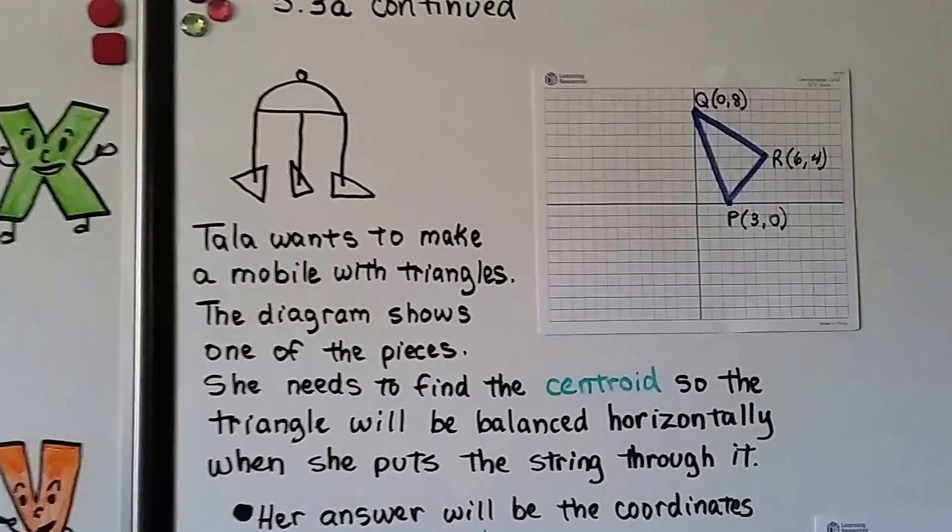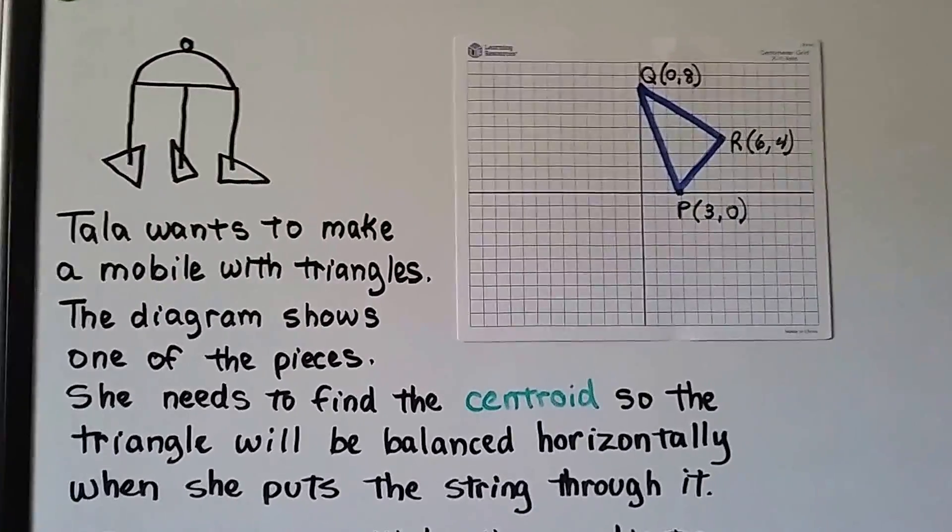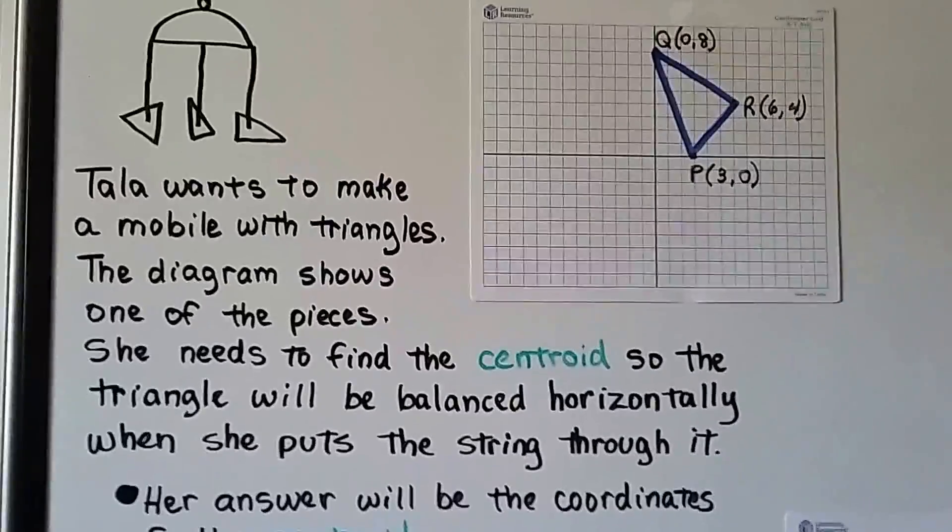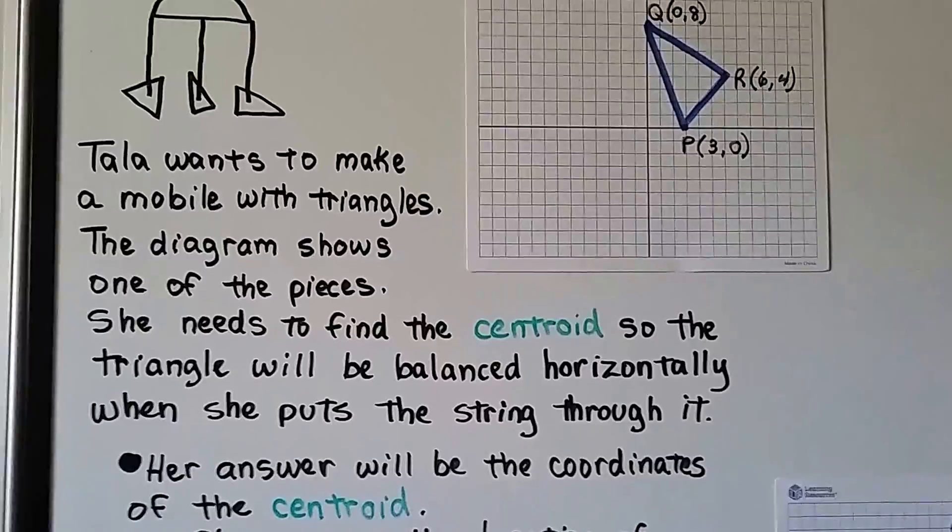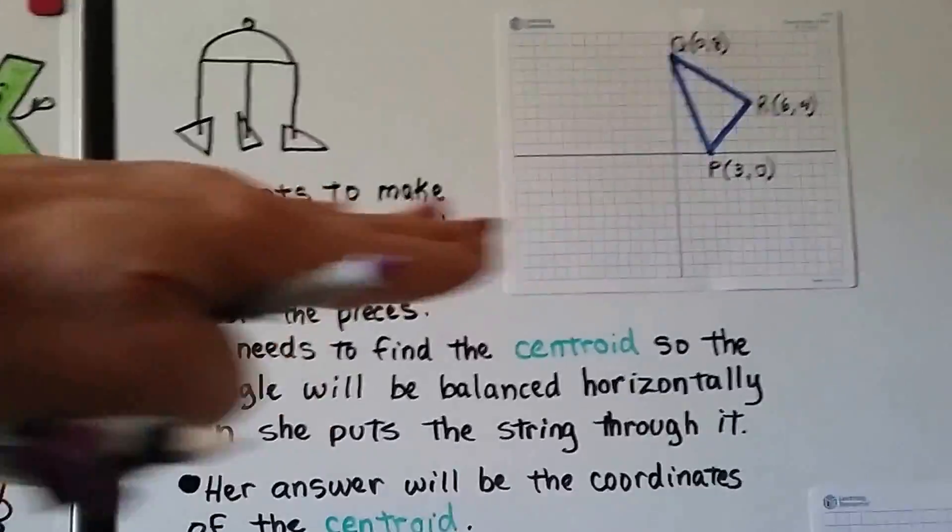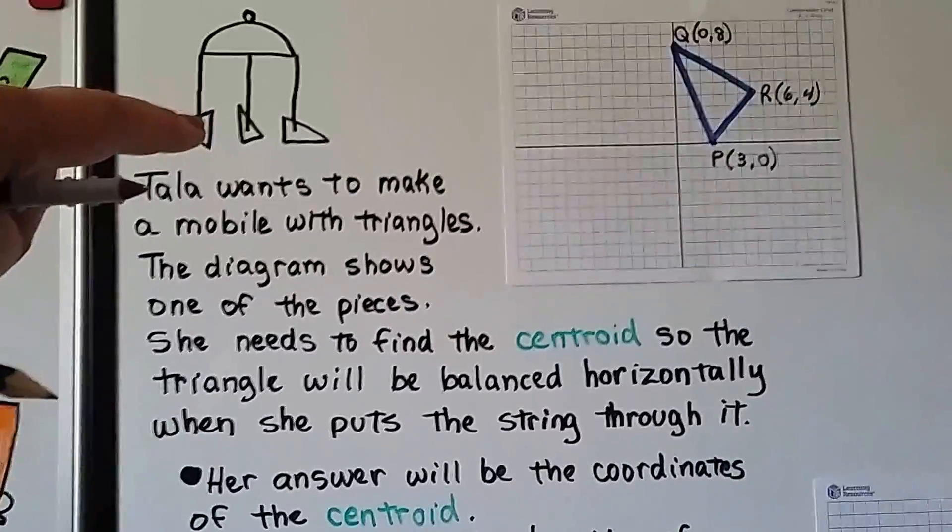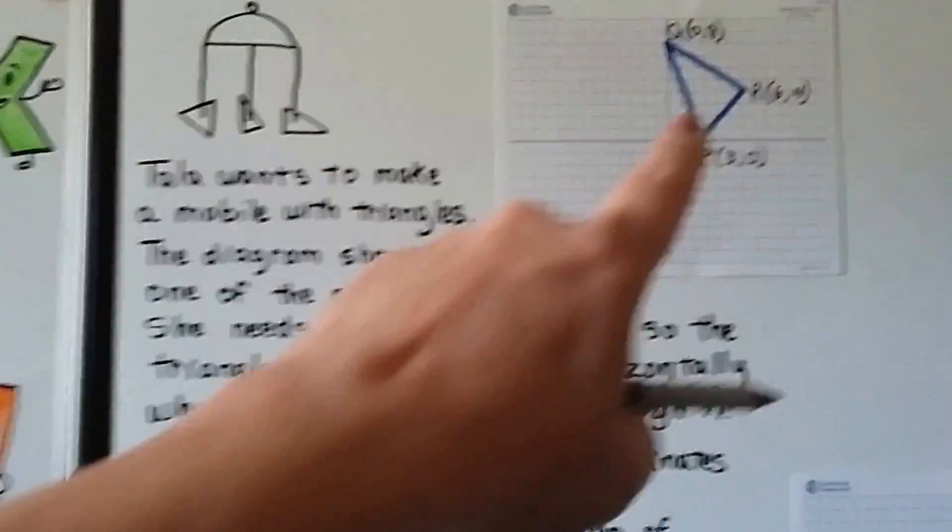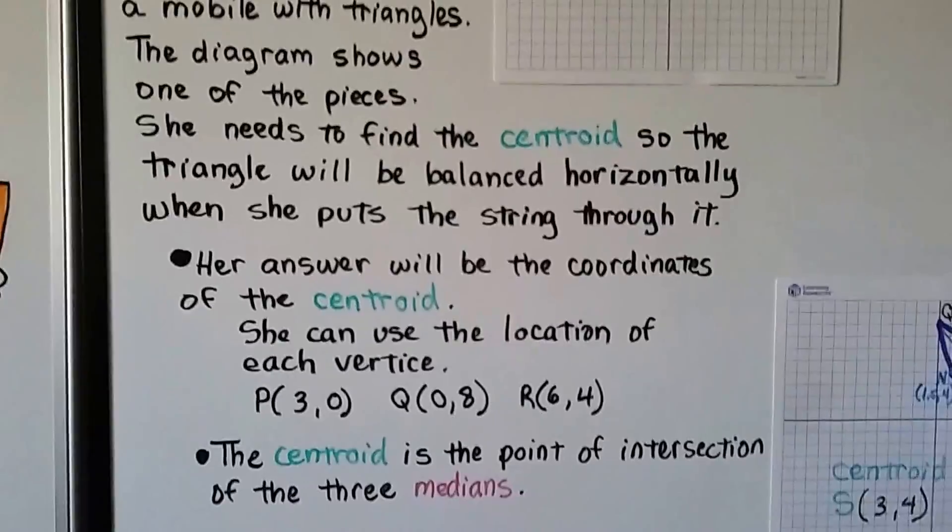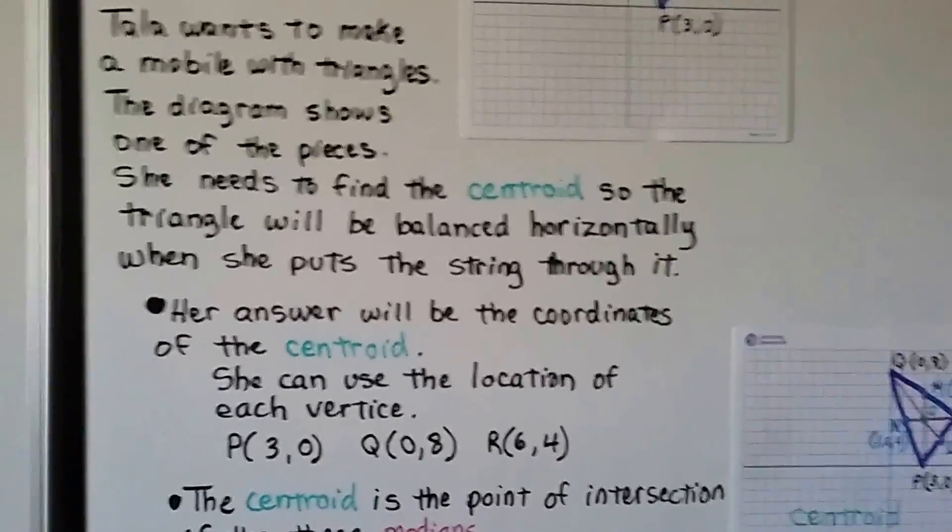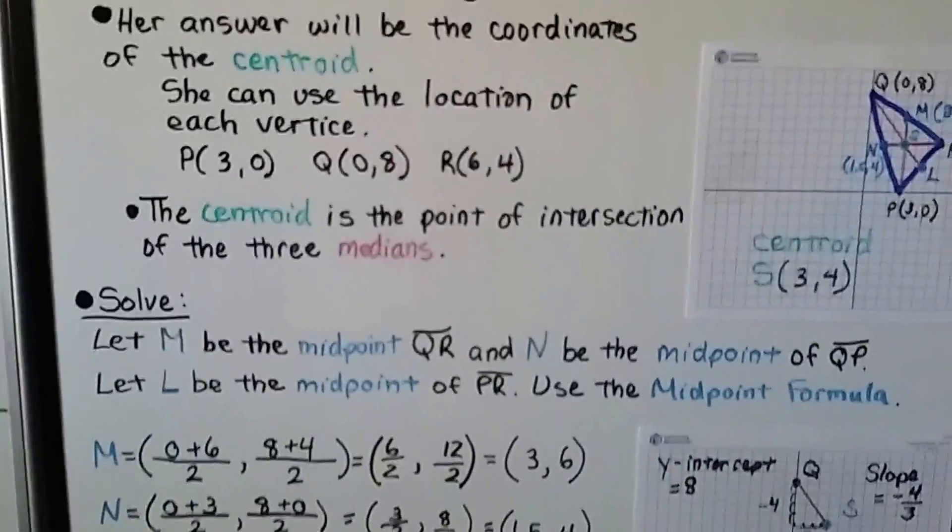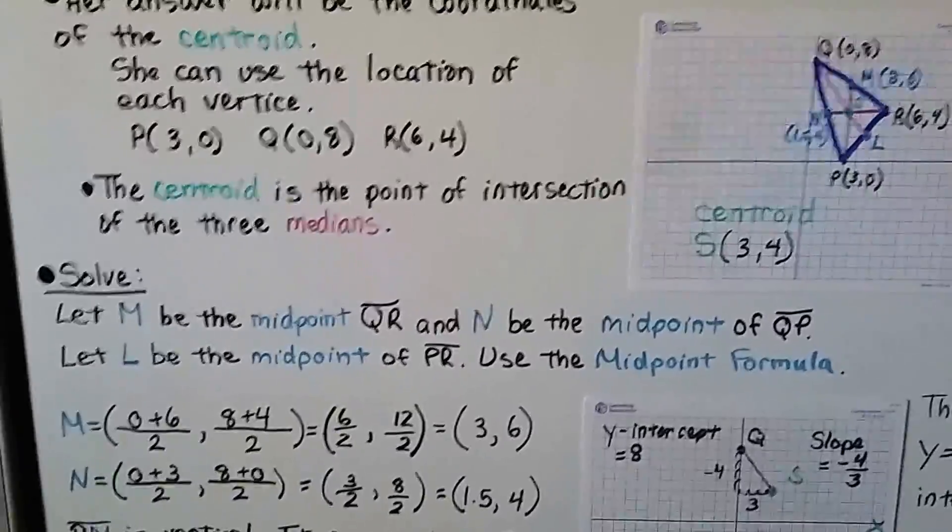Natala wants to make a mobile with triangles, and the diagram shows one of the pieces. So we can see it here, and we can see the vertex coordinates. She needs to find the centroid so the triangle will be balanced horizontally when she puts the string through it. So when she puts a string through the triangle, she wants it to lay horizontally flat, each triangle. So she has to find the centroid of each triangle. And the centroid is the point of intersection of the three medians.